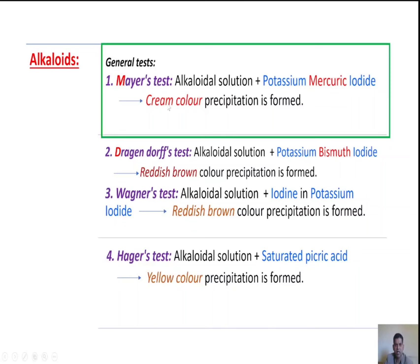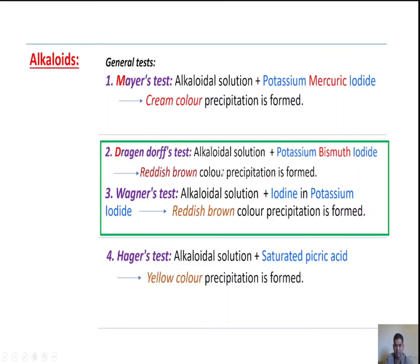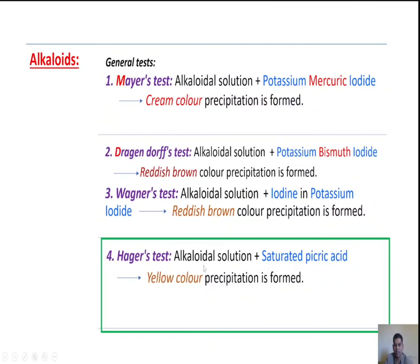Next, general tests. Alkaloids are generally identified with the following tests. First, Mayer's test: the alkaloidal solution is treated with potassium mercuric iodide; it gives a cream-colored precipitate. Second, Dragendorff's test: treated with potassium bismuth iodide; it gives a reddish-brown precipitate. Third, Wagner's test: the alkaloidal solution is treated with iodine in potassium iodide solution; it produces a reddish-brown precipitate. Fourth, Hager's test: treated with saturated picric acid solution, which is yellow, producing a yellow precipitate.